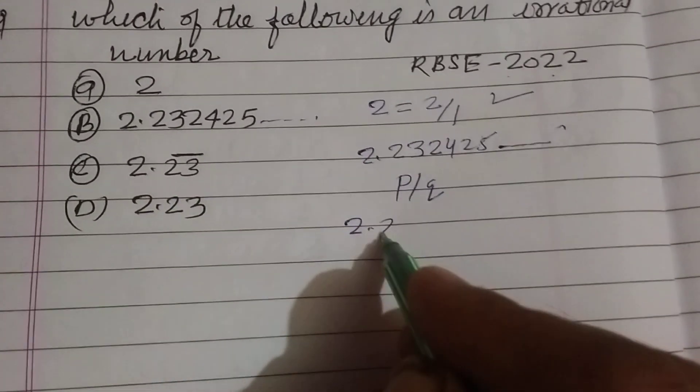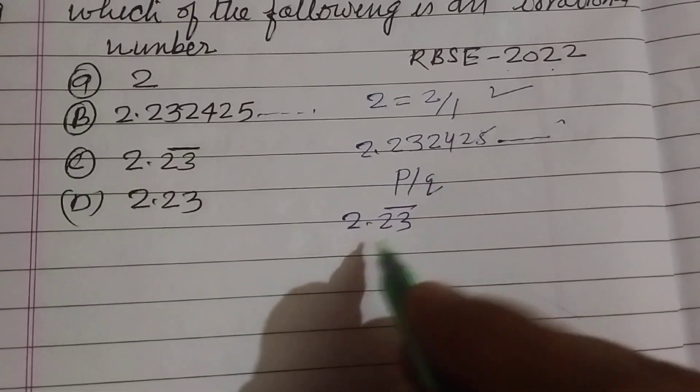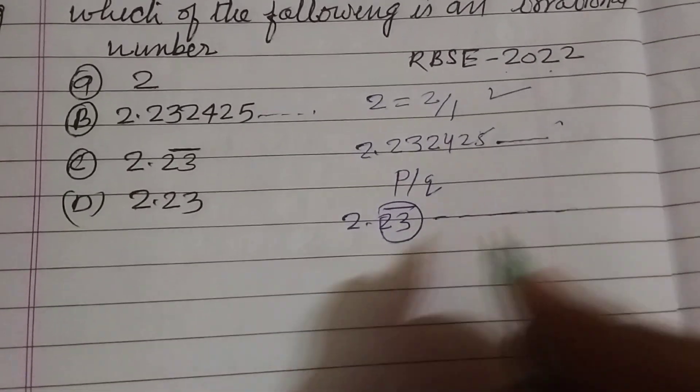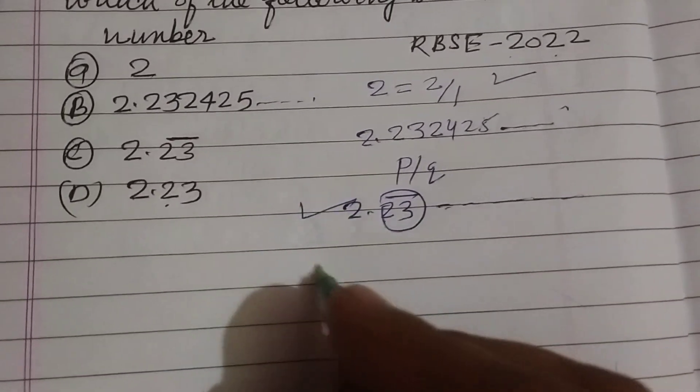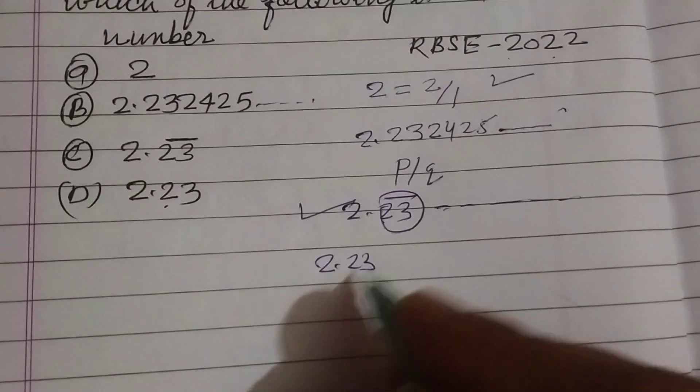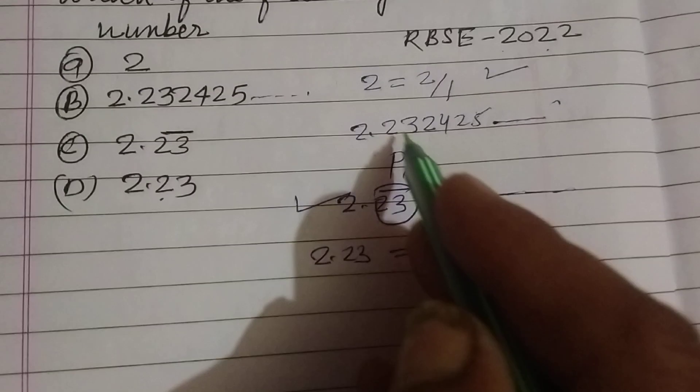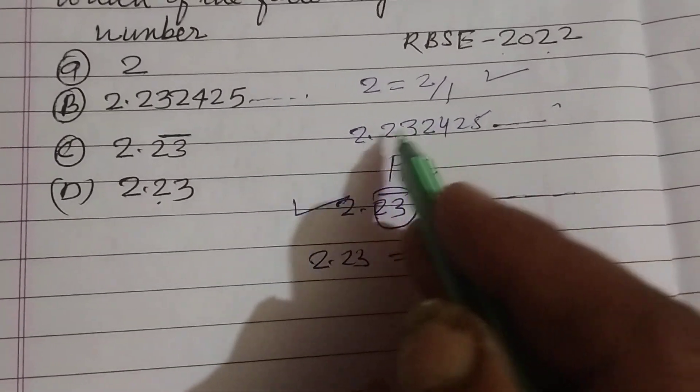And 2.23 bar is written because two digits are repeating many times. Therefore this is a rational number. 2.23 is also a rational number. We can write it as 223 over 100. But there is no sequence of repeating number or repeating digits.